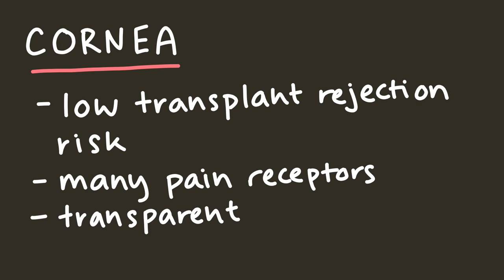Cornea is transparent, so light can pass through it and get to the parts of the eye it needs to get to so we can see. Interestingly, it's also responsible for most of the focusing of light.